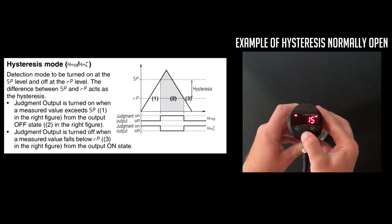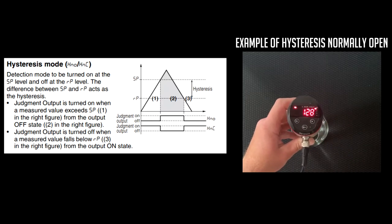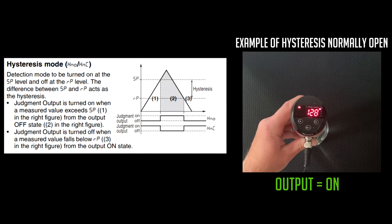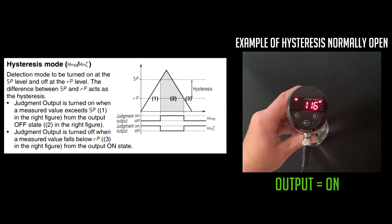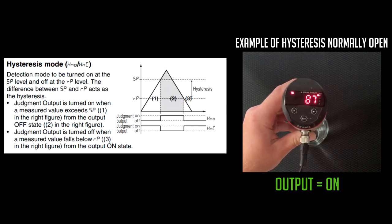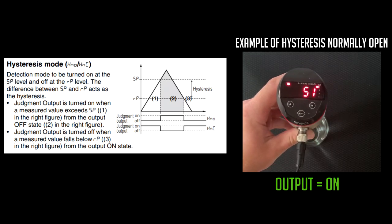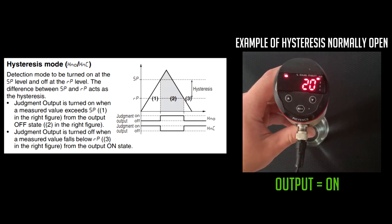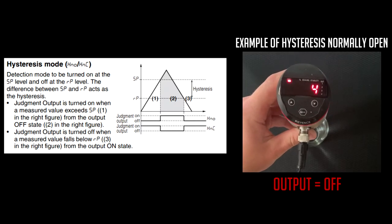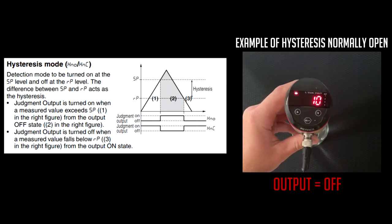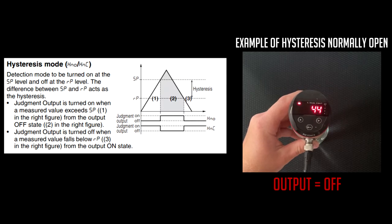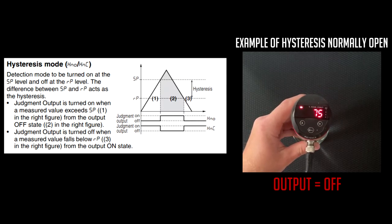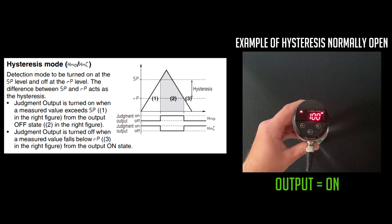So now I have set my SP1 as 100, and my RP1 as 15. So as we go through this example, we see that since we're above 100, our output is on, and as that number drops all the way to our RP1 level of 15, our output would then turn off. And that output will not turn back on until we hit that SP1, or set point 1 level again, right here.